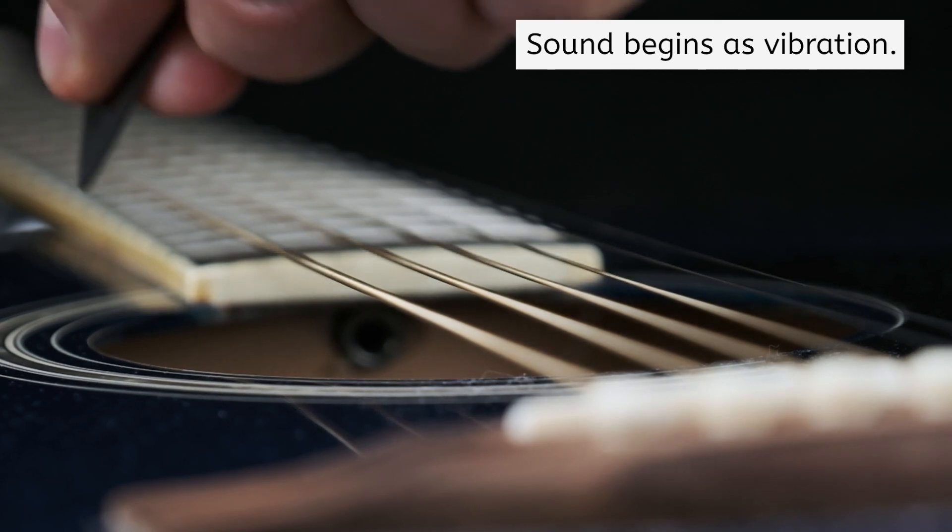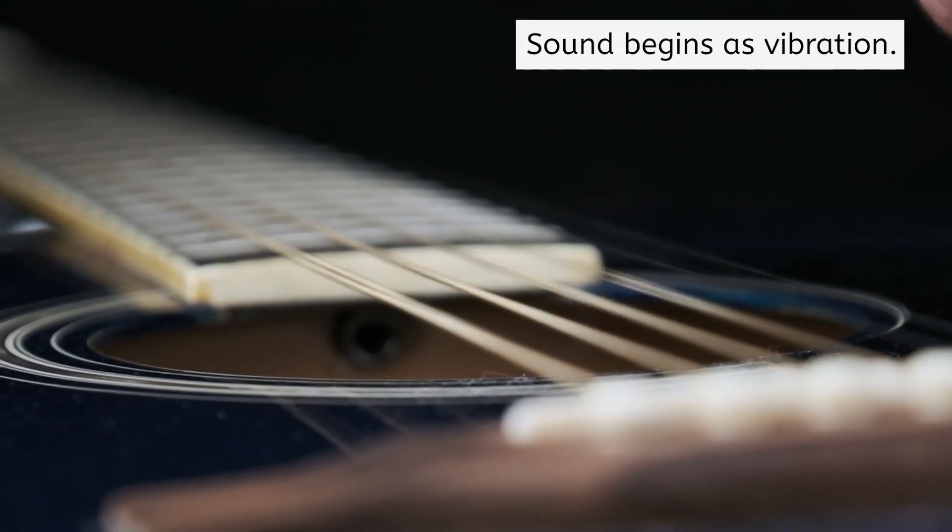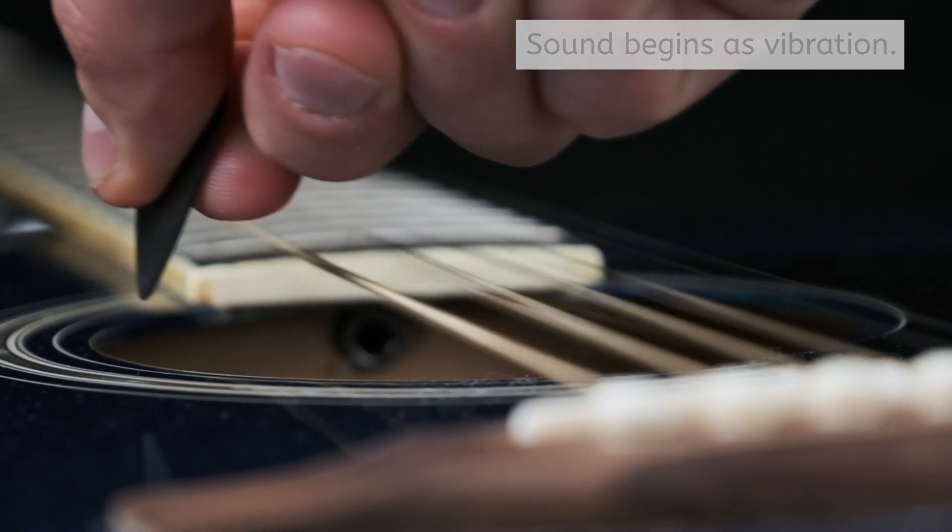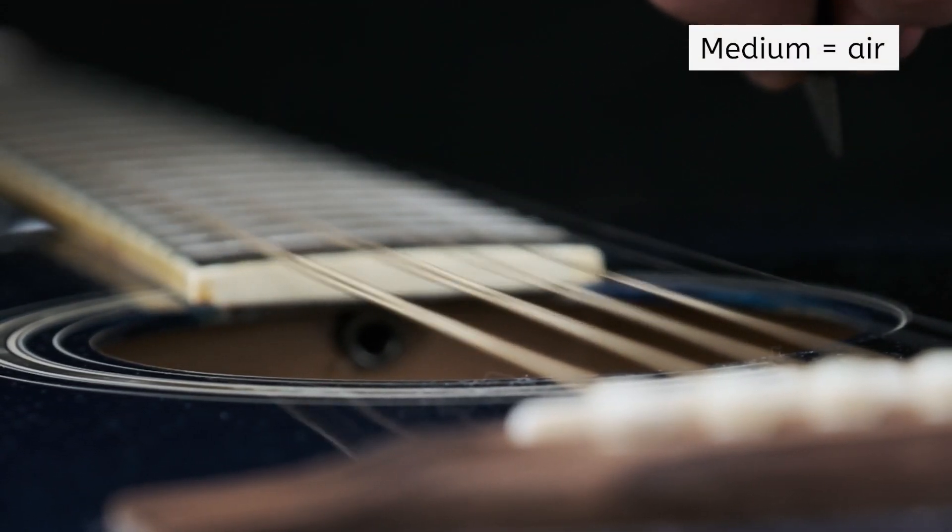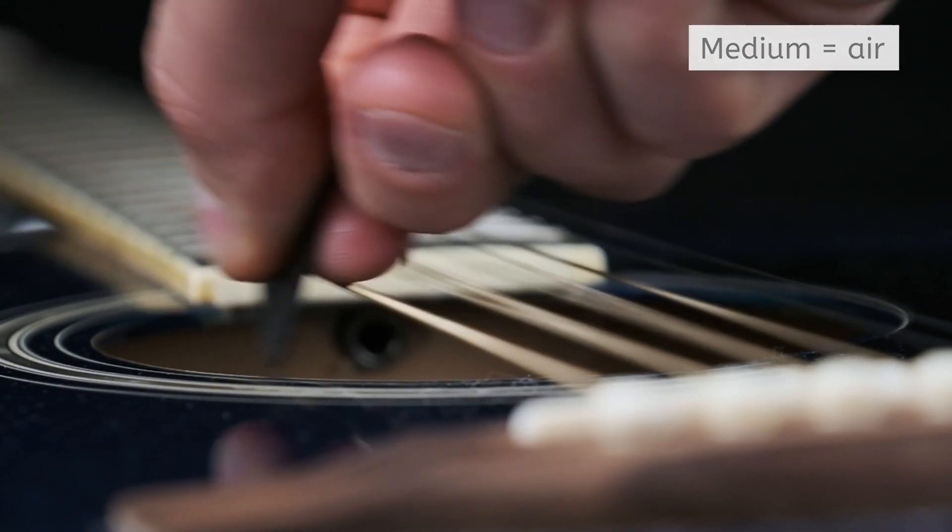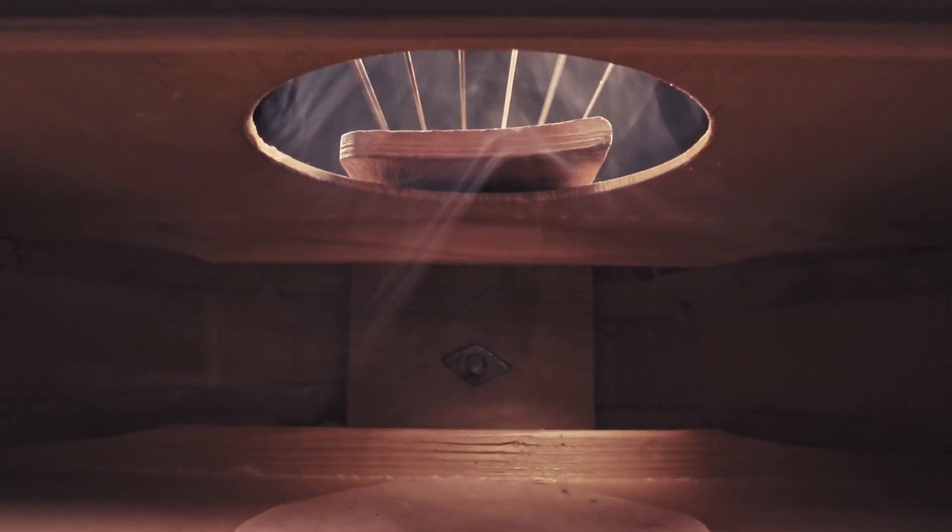The journey of a sound wave begins with a vibration, like the vibration of these guitar strings. When an object vibrates, it moves the particles of the medium around it, in this case air molecules, which then move adjacent particles. From inside the guitar, you can even see the air being moved around by the vibrations of the string. This creates a domino effect that carries the energy of the vibration through the medium.